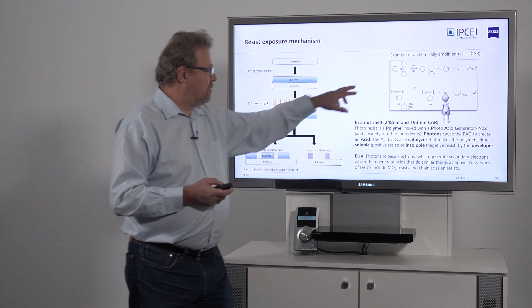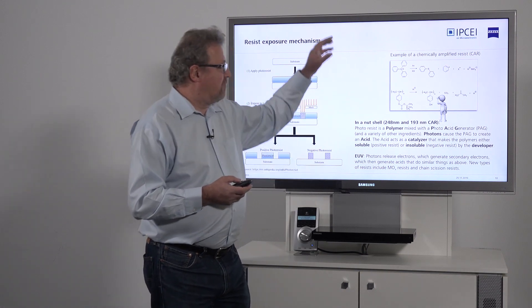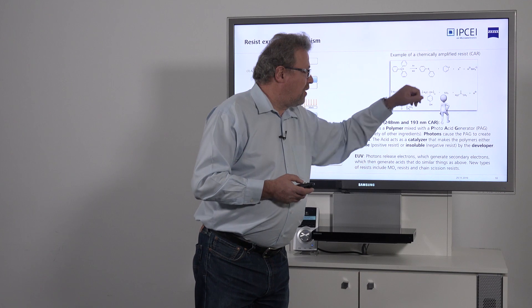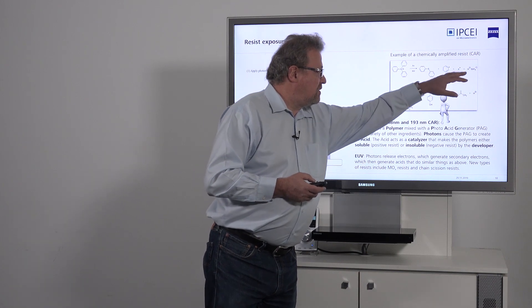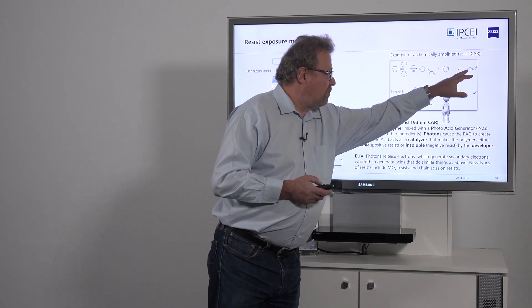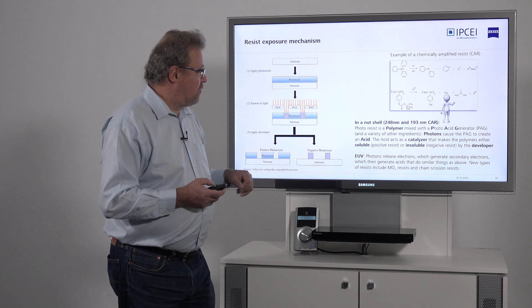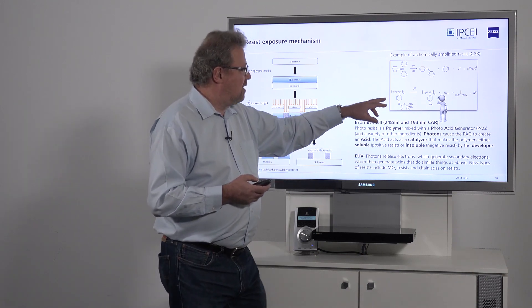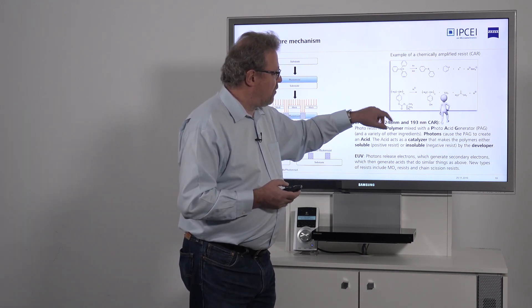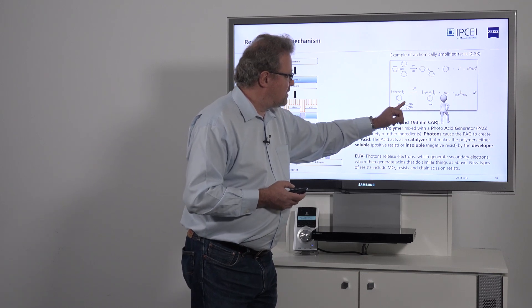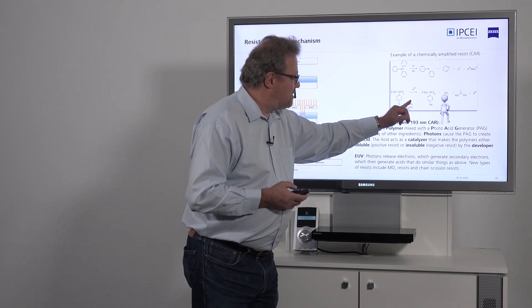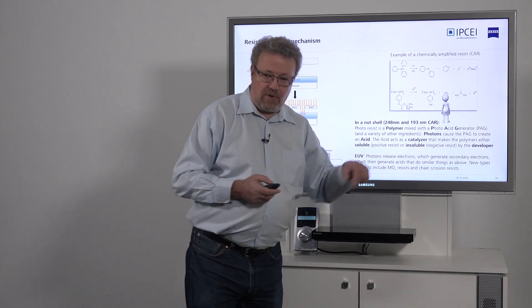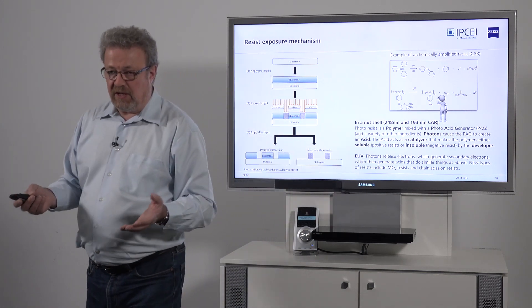That molecule — that's what you see here — when a photon hits it, it breaks the molecule apart into a couple of pieces. One of them is an acid, a photoacid. And that photoacid now reacts with the polymer and breaks pieces off, and now the polymer becomes soluble by the developer.